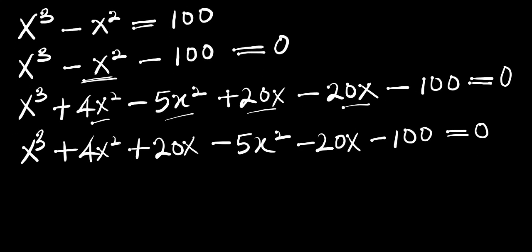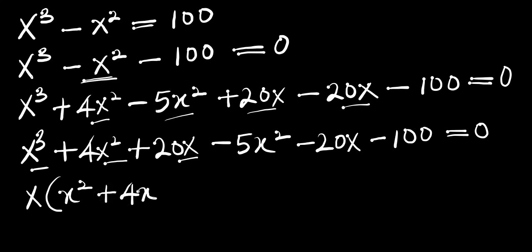At this point we have x here, x and x — we can factor that out: x into x² plus 4x plus 20, and we can also factor out negative 5 from the remaining terms.